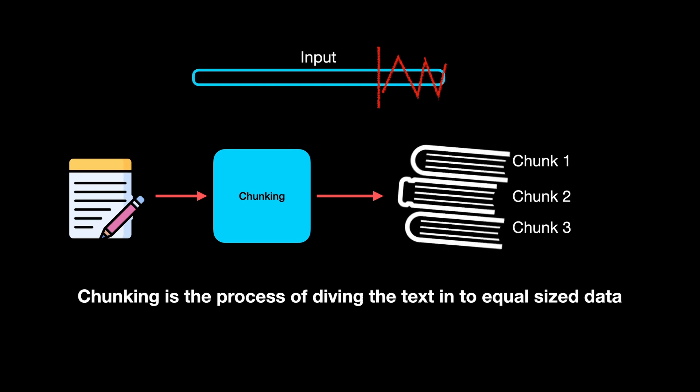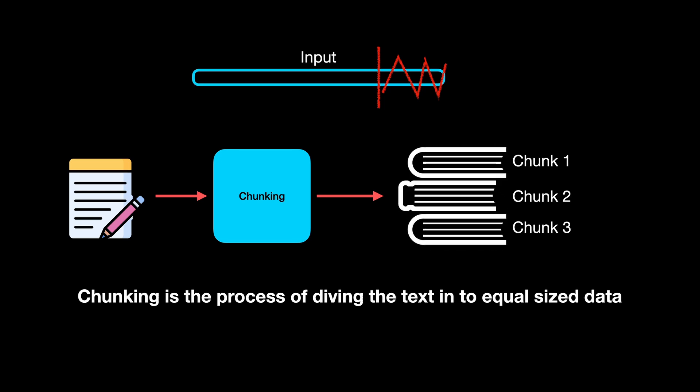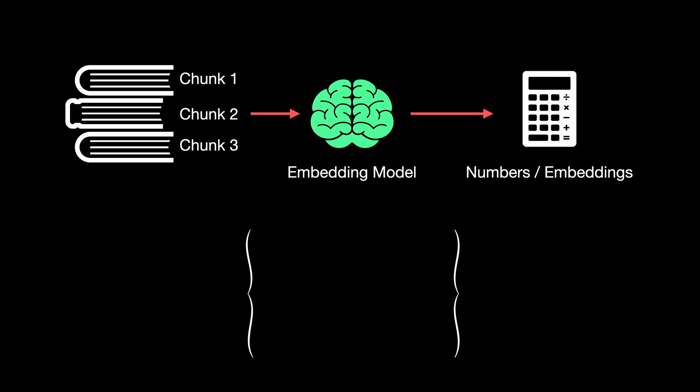Chunking is the process of dividing the text into equal-size pieces. In this example, the input text is divided into three chunks. These chunks are then passed through an embedding model. The output of the embedding model is a list of fixed-size vectors called embeddings. Let's fix the length of this vector to be three. So chunk one gets embedded into values 0.1, 0.2, and 0.3. Similarly, each chunk can be vectorized to get their corresponding vectors.